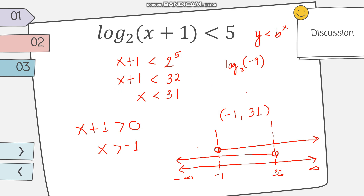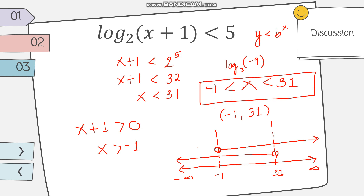Writing the final answer using variables: x should be greater than negative 1 but less than 31. Both conditions must be satisfied when solving logarithmic inequalities — you have to consider the argument as well to find the valid solution.